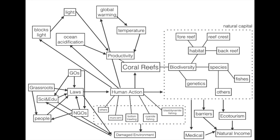Grassroots organizations need to follow the laws and gather people to conduct separate, independent campaigns at the grassroots level. Science and education need to apply their findings to inform laws. Science should research the damaged environment, and the data gathered can be used to evaluate the effects of preservation and conservation efforts. Education about the damaged environment should happen, and the damaged environment should also serve as a form of education for people.